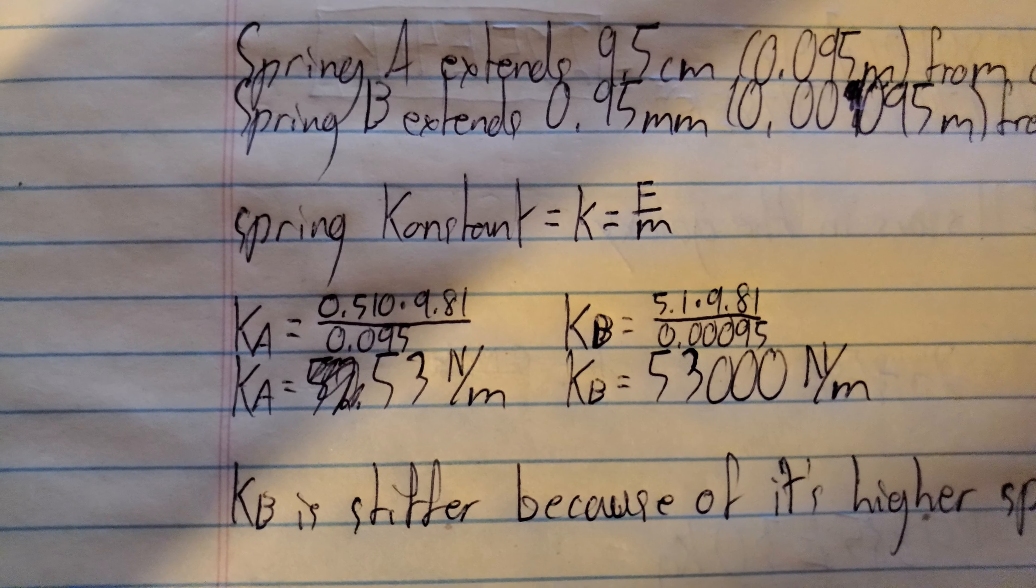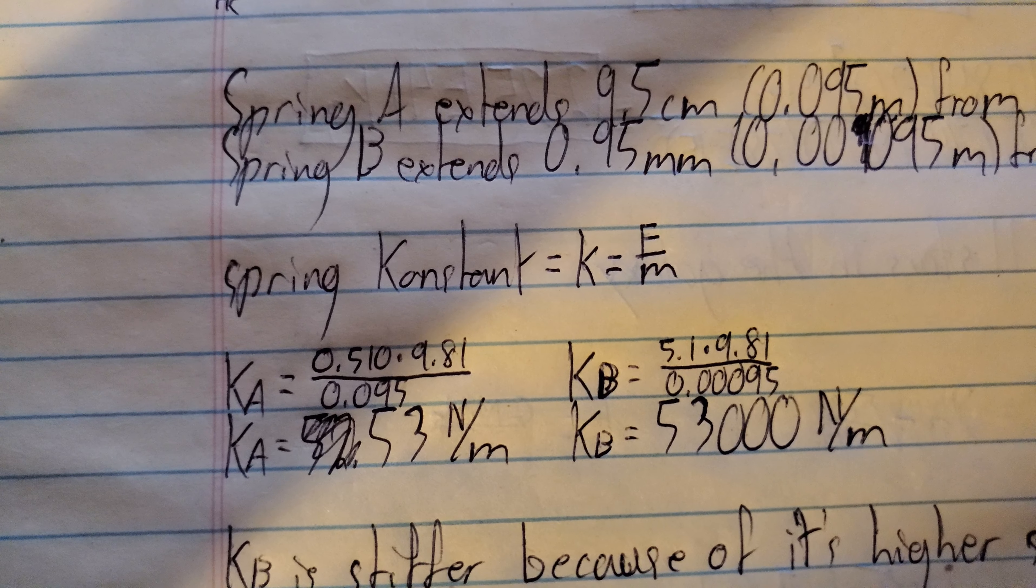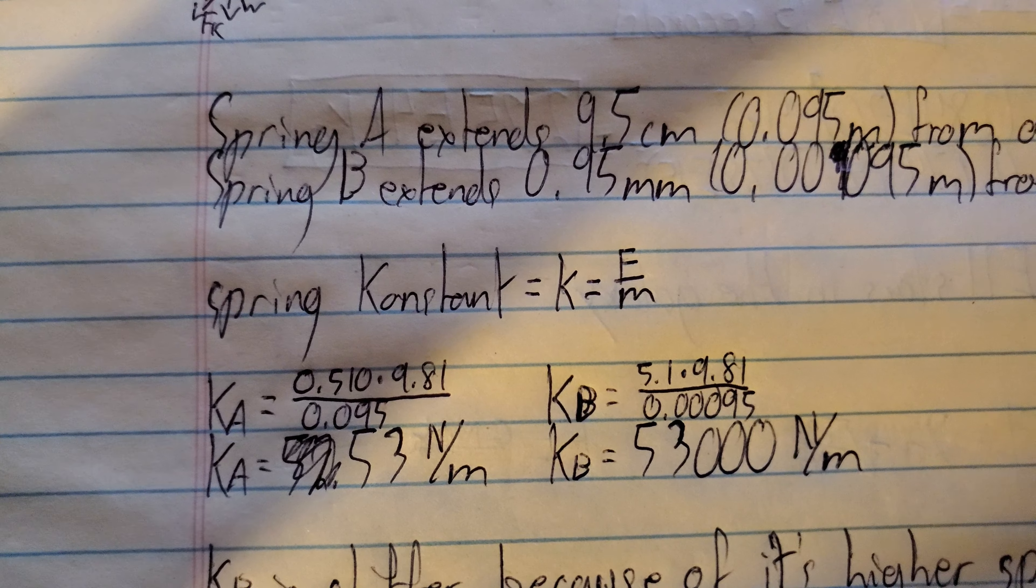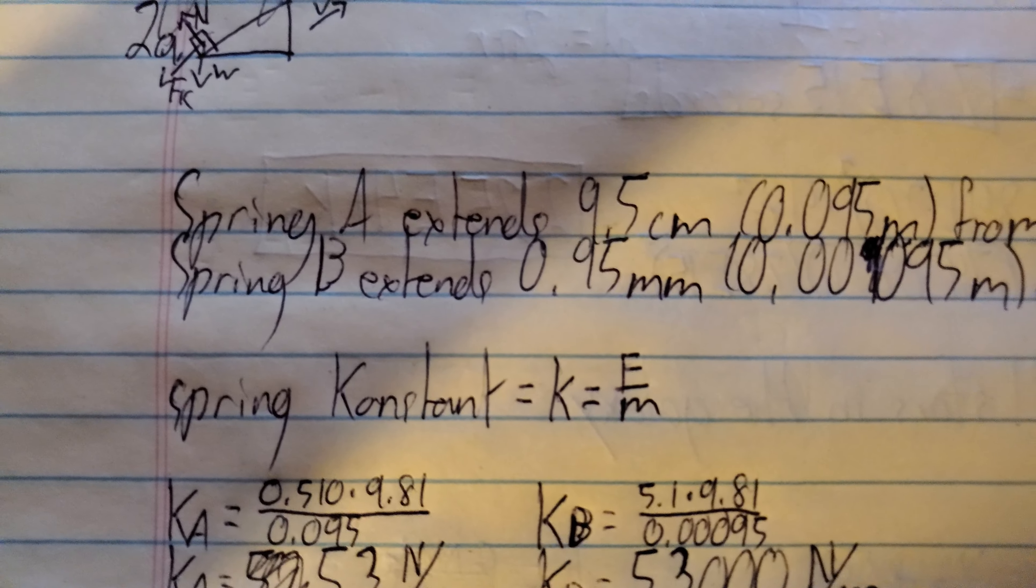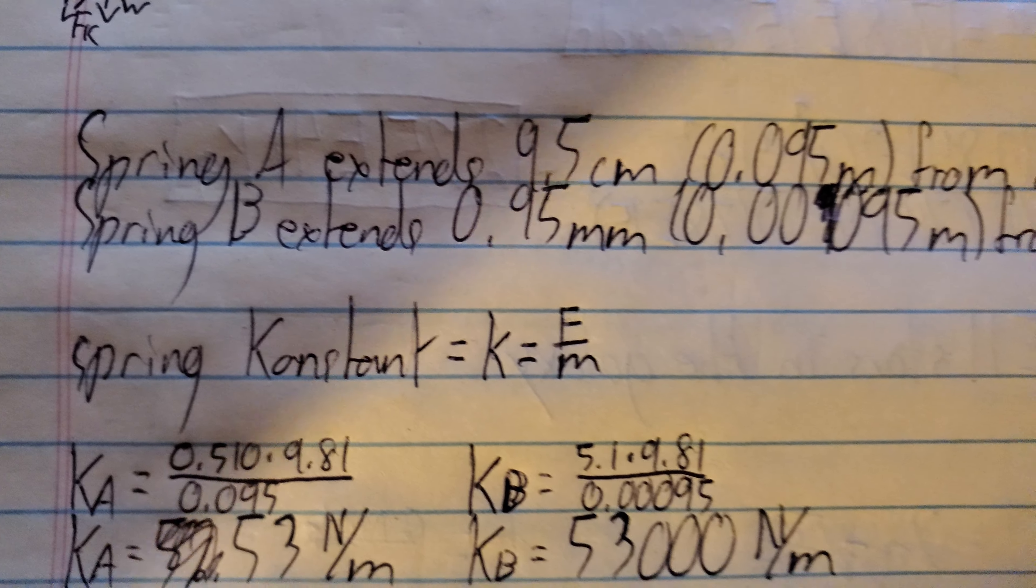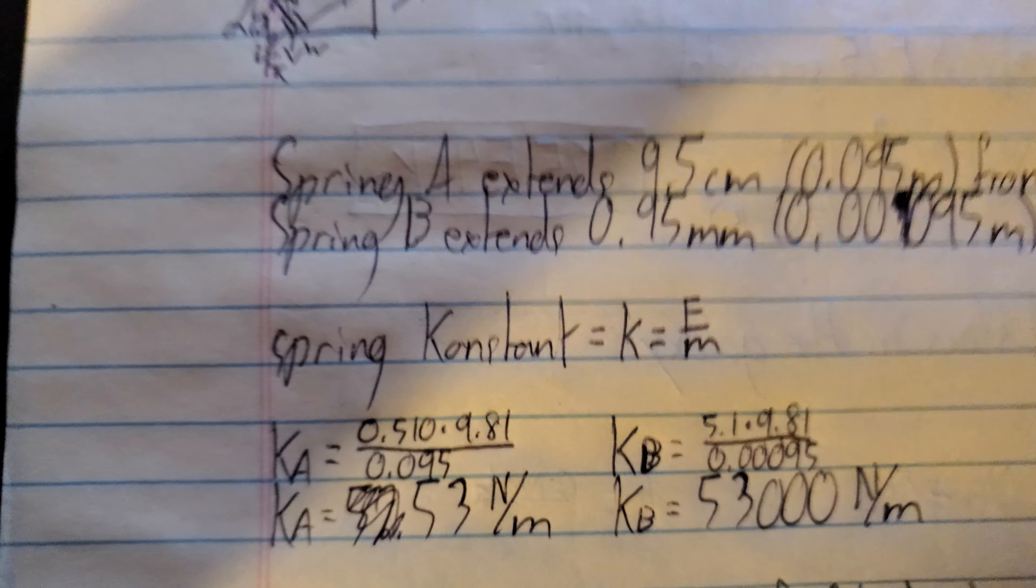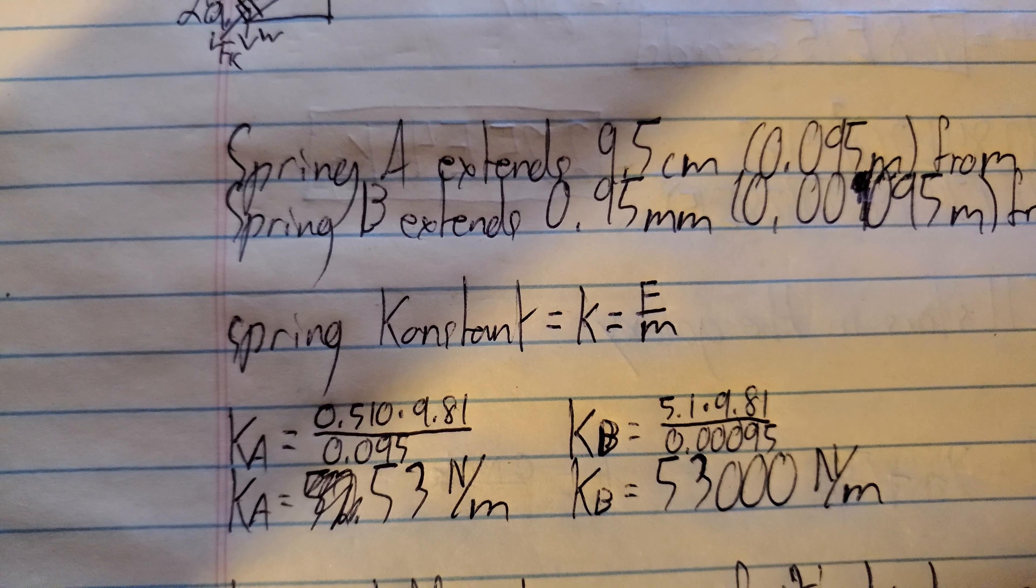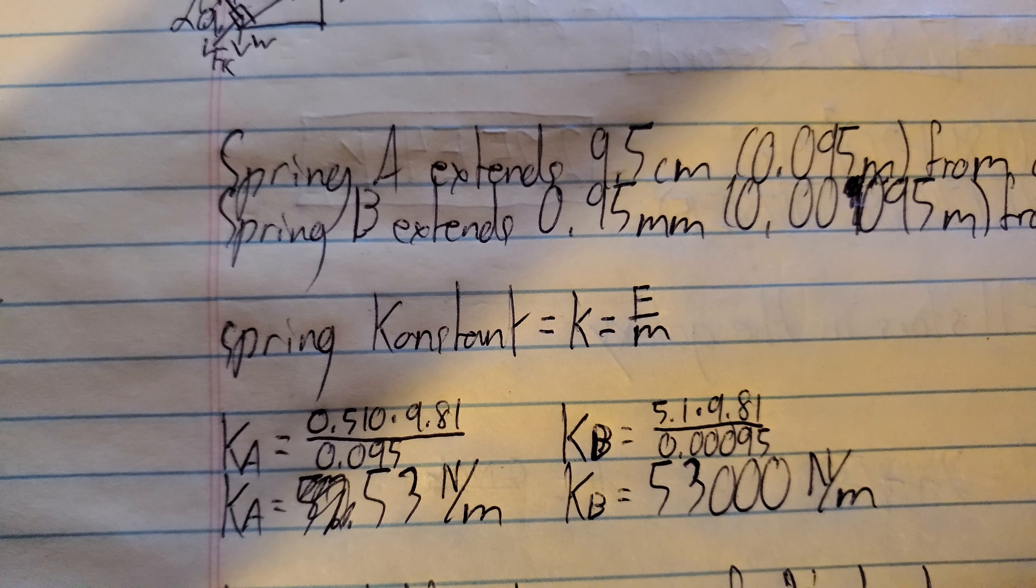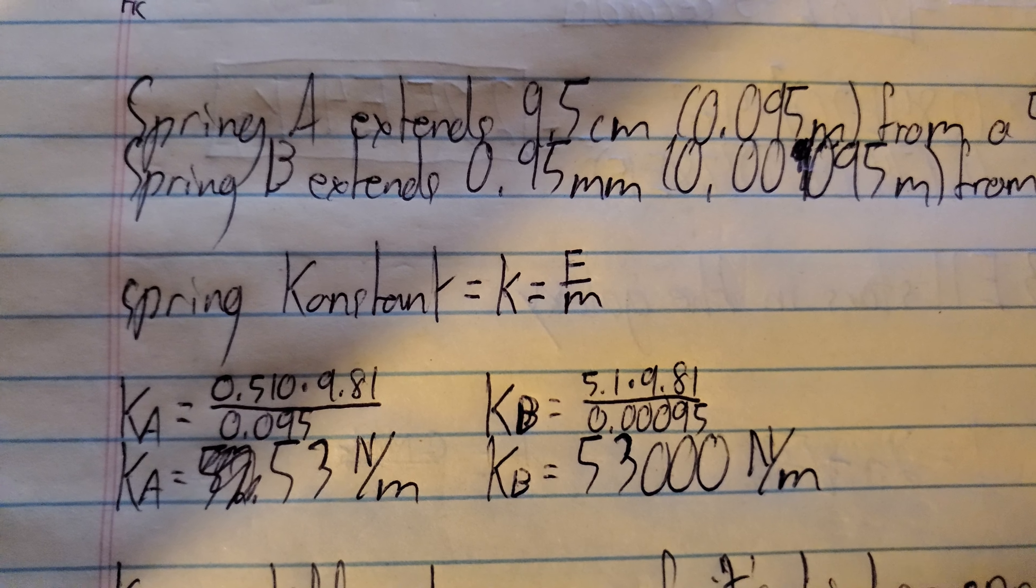Now we've got a spring constant, which I spelled with a K to maybe like give some alliterative learning mnemonic, whatever. I don't know how that works. We always write that as K and that's going to be F over m. So in other words, you can look at the spring constant as being the amount of force required to extend or compress a spring a given distance.